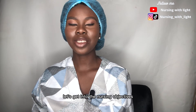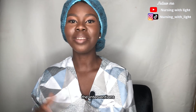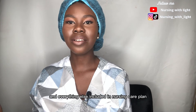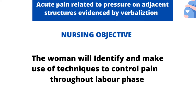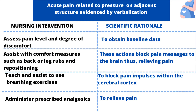Now that you are familiar with the nursing diagnoses, let's get into the nursing objectives, interventions, scientific rationale and everything else in the nursing care plan. The first nursing diagnosis is acute pain related to pressure on adjacent structures, evidenced by verbalization. Our objective is that the woman will identify and make use of techniques to control pain throughout the labor phase — primarily the active phase of the first stage. The first intervention is to assess pain level and degree of discomfort, and the scientific rationale is to obtain baseline data.